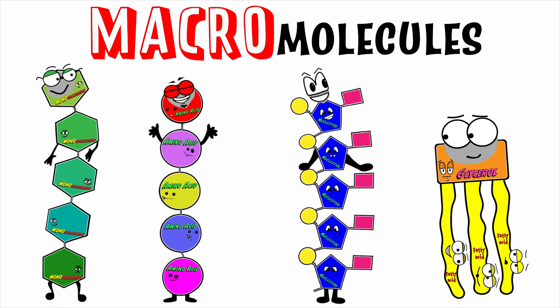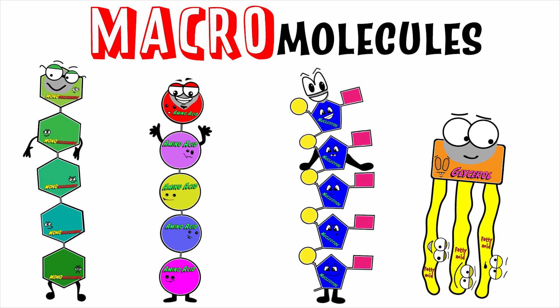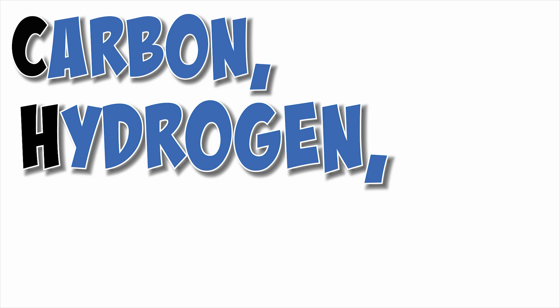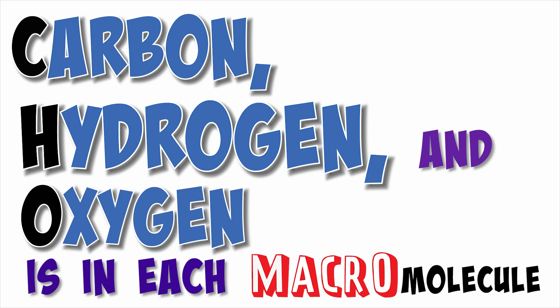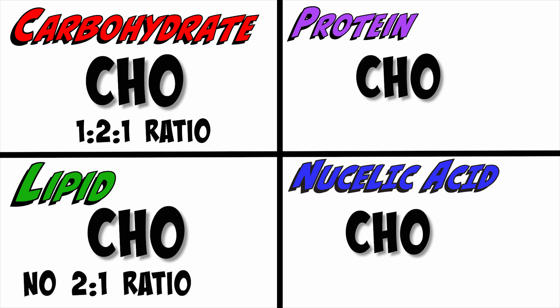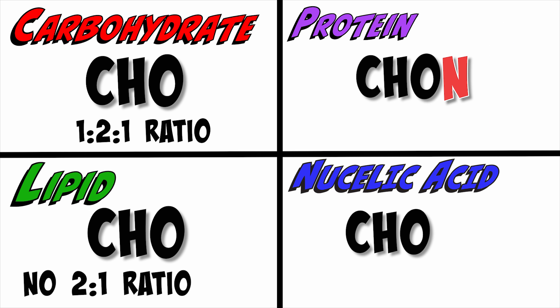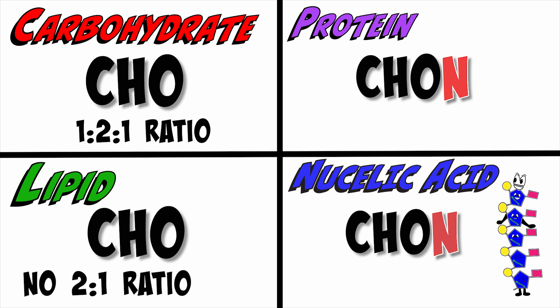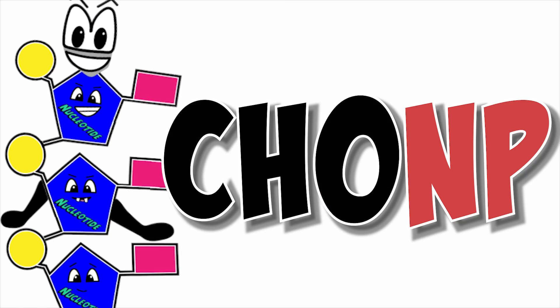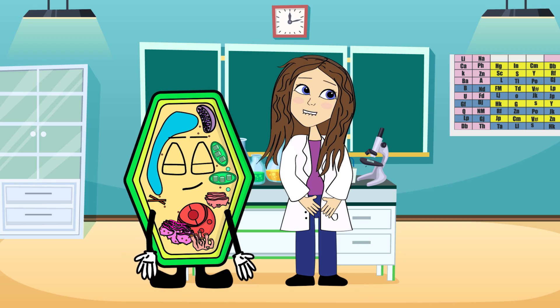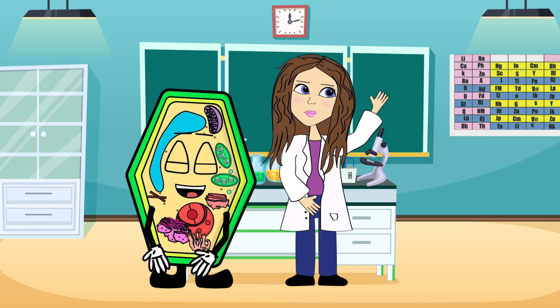The last thing I want to mention is what type of elements make up each macromolecule. Carbon, hydrogen, and oxygen are in each macromolecule — to remember this, think CHO. But proteins also have the element nitrogen, so add an N to CHO for them: CHON. Nucleic acids also have nitrogen, but they contain phosphorous as well, so for nucleic acids think CHONP.